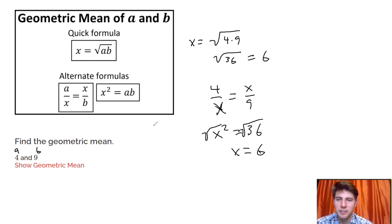The alternate method just says x squared equals A times B, and that gives us what we had before, x squared equals 36, and that gives us 6. So all three of these formulas work. I think this one's the fastest. Quick formula, but you also have these alternate formulas.